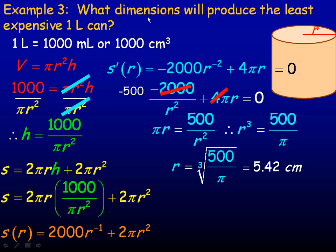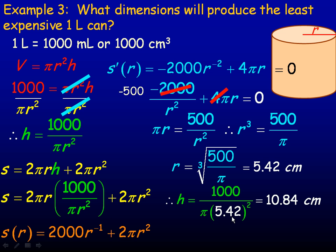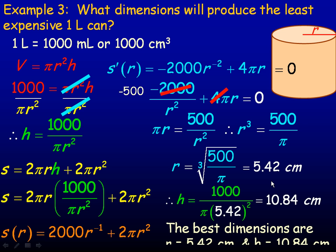Since the question asks for dimensions, we need the height as well. Substituting r ≈ 5.42 into h = 1000/(πr²) gives h ≈ 10.84 centimeters. Notice the height is exactly double the radius — that's not a coincidence. So the best dimensions are a radius of 5.42 cm and a height of 10.84 cm.